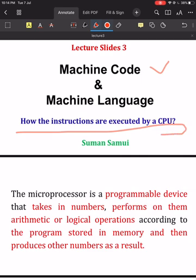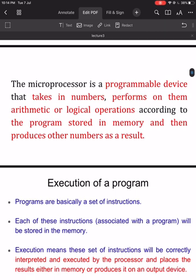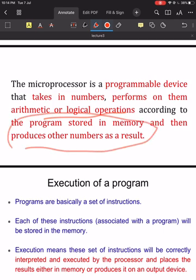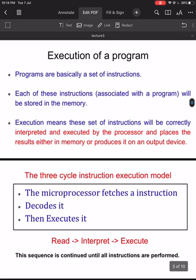To understand machine language, we need to understand how instructions or programs are executed by the CPU. We know that the microprocessor is the CPU of a microcomputer. By definition, the microprocessor is a programmable device that takes in numbers, performs some arithmetic or logical operations according to the program stored in memory, and then produces results and sends them to some output device or stores them in memory.